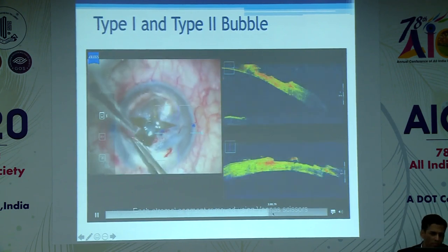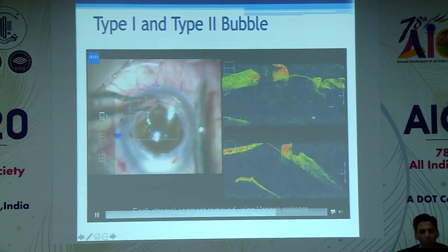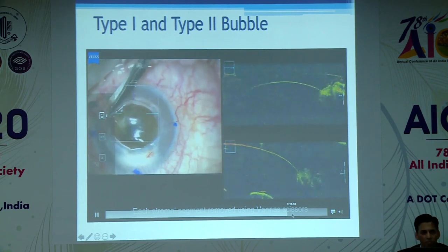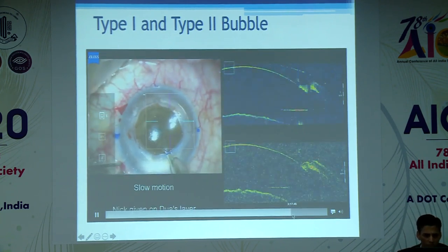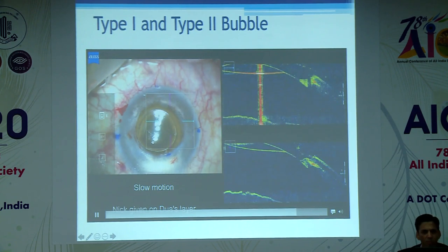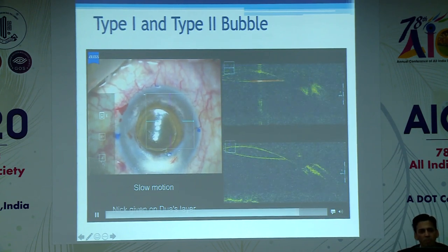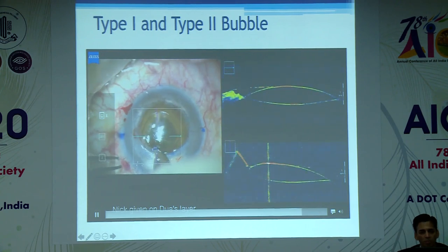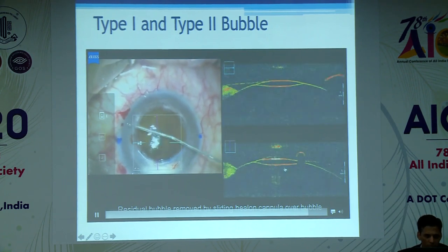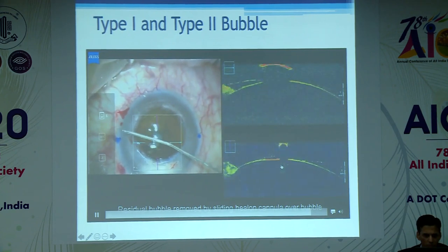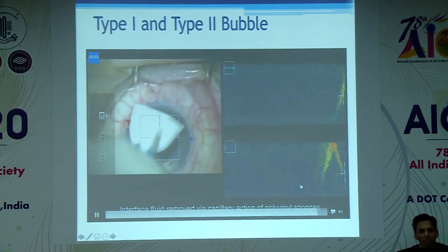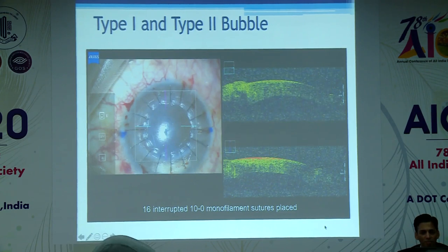The overlying stromal layers are removed to expose the bare Descemet's membrane with Dua's layer. It is quite expanded at the back. A nick is given again because there is a second bubble present in the periphery — notice the second bubble coming out. Since it is a large one, another nick is made to release it. On the intraoperative microscope you can actually see what is happening. Both bubbles are now completely collapsed, after which the full-thickness donor cornea is placed with 10-0 monofilament nylon sutures.